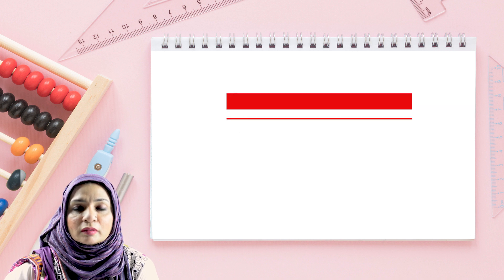Here is one example of direct proportion: if you buy more number of pens, the cost of pens will become more. As you can see from these arrows, if one quantity increases, the other quantity will also increase. And if the quantity of pens decreases, the cost of the pens will also decrease.